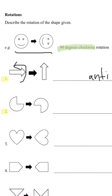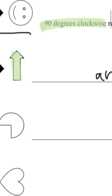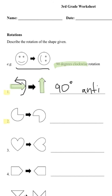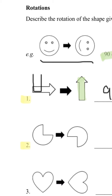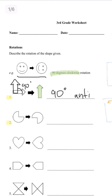Now let's figure out the degrees it rotated. From here it went to here. If we said 90 degrees, that is correct, because the arrow went from here to here, and that forms a 90 degree angle. So our answer is 90 degrees anticlockwise rotation.